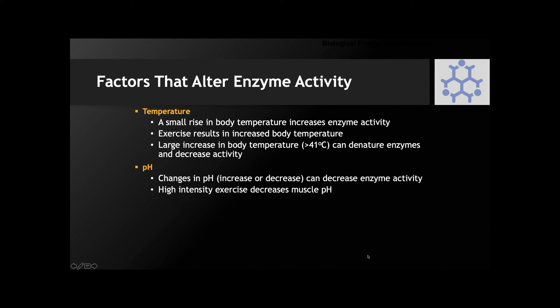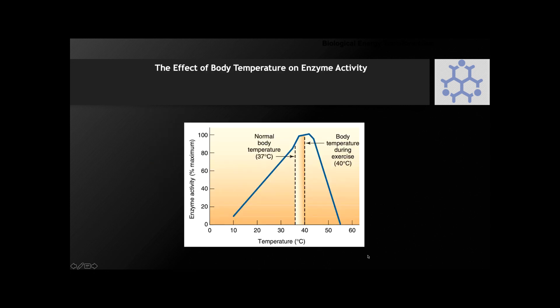Enzymes are also susceptible to changes in pH — both increases and decreases can have a profound impact on enzyme form and function. A contracting skeletal muscle produces a lot of hydrogen ions, especially when glucose is being metabolized anaerobically and converted to lactic acid, which releases many hydrogen ions. That can alter the pH of the cellular environment, the interstitial space, and if it gets into the bloodstream, it can impact blood pH as well. So we naturally challenge temperature and acidity during exercise.